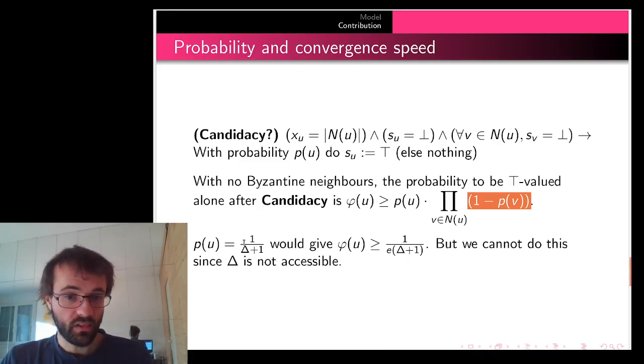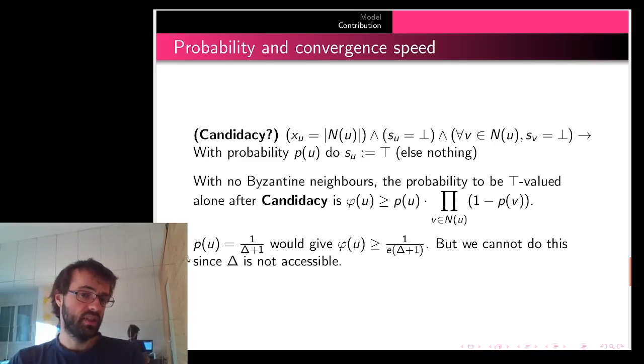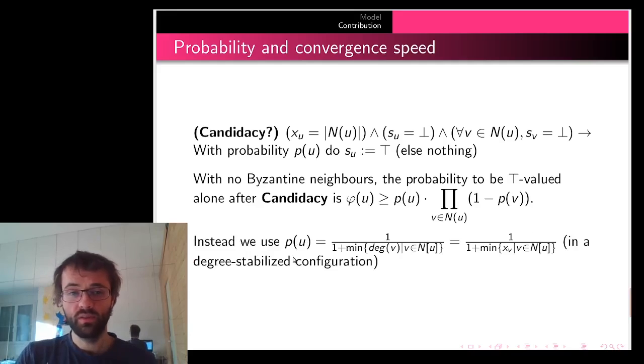We could have taken p(u) as 1 over delta plus 1, which would have given the same probability, but we cannot do this because delta is not available information for the nodes. So we took p(u) as 1 over 1 plus the minimum degree in the neighborhood of u. This is accessible information, and it works, giving the same bound.